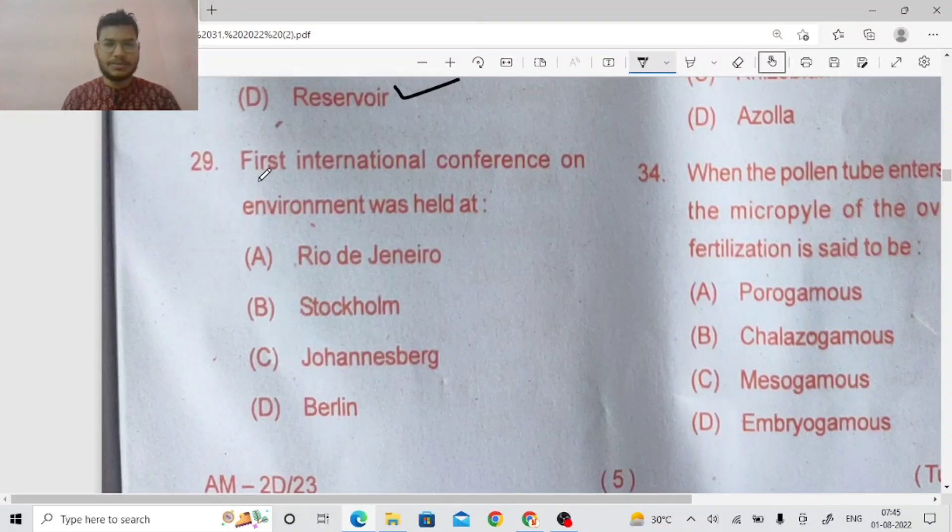Lotic and lentic. First international conference on environment was held at Stockholm is the right answer.